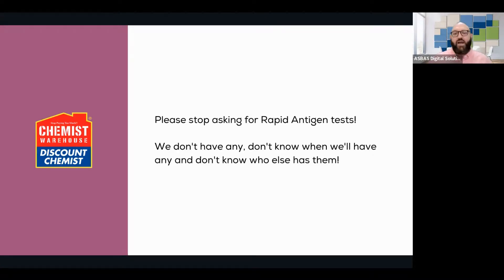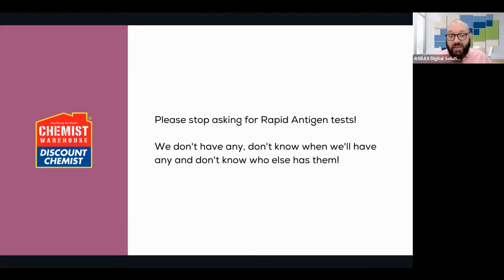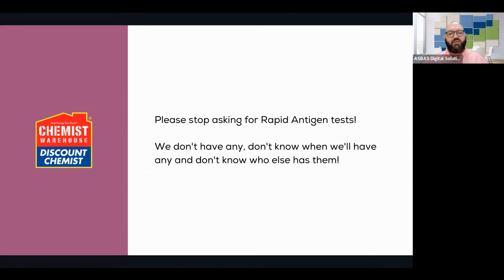Instead of going down the route of KUBA — saying here's something you need to know, which is we are out of rapid antigen tests; here's something you need to understand, which is due to supply chain uncertainty we don't actually know when we'll have more; the belief being we don't have exact information on timing or who else has them; but here's an action you can take — we suggest you call around some other pharmacies and ask if they've got any in stock. That would have been a perfect KUBA communication, instead of 'Please stop asking for rapid antigen tests.'